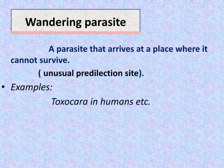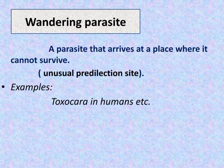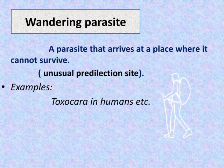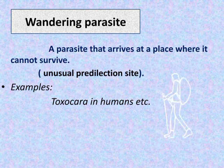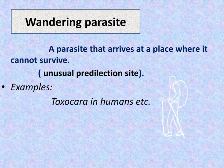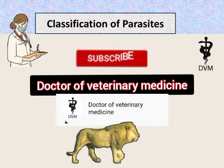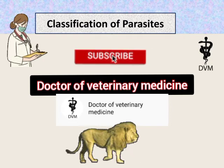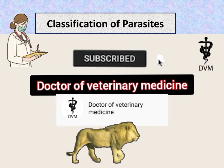Wandering parasites arrive at a site where they cannot survive; the site may be an unusual predilection site. Examples include Toxocara in humans. Thank you for watching — for any questions, comment below and subscribe to our channel.